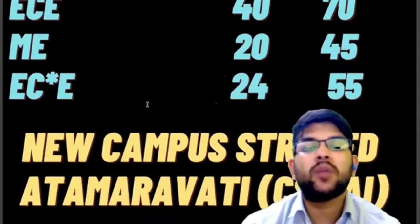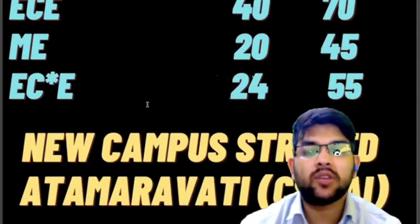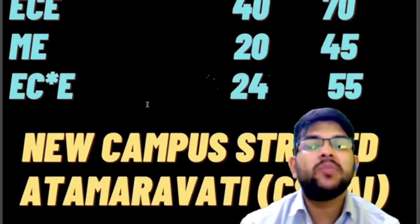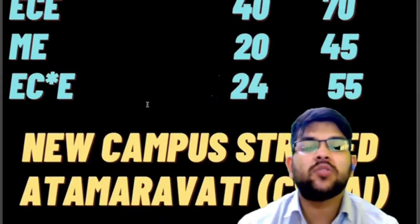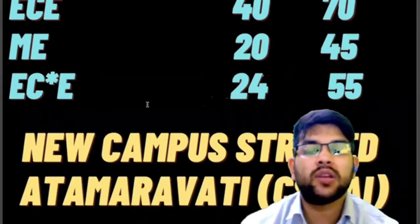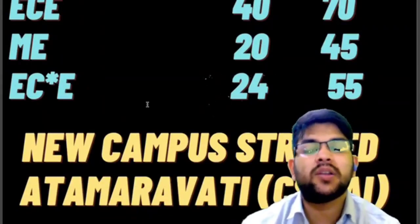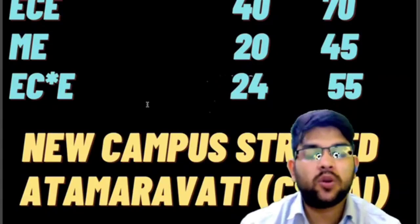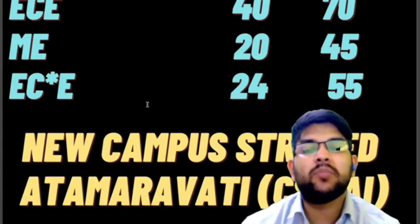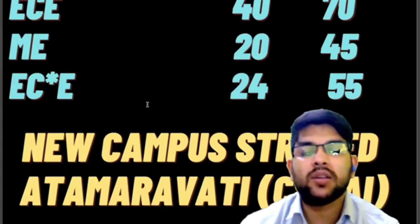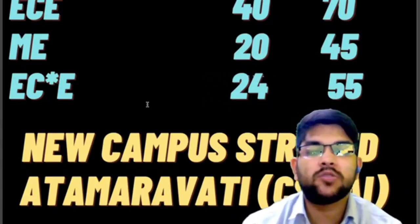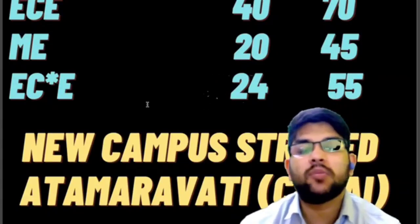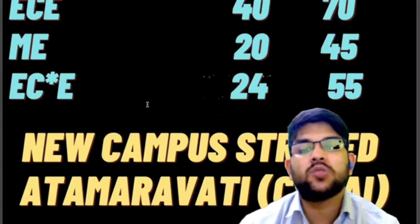There is also a new campus of Amrita University starting this year at Amravati, with two branches as of now — CSE and AI. There is no cutoff data available since it is a new campus. You can choose the Amravati campus at the time of the counseling process.